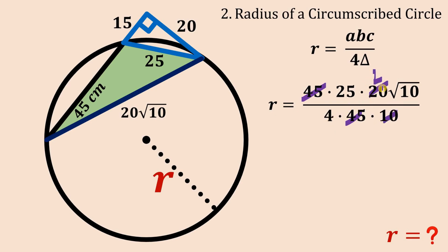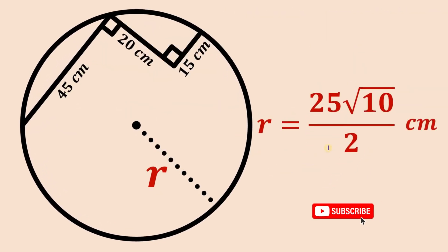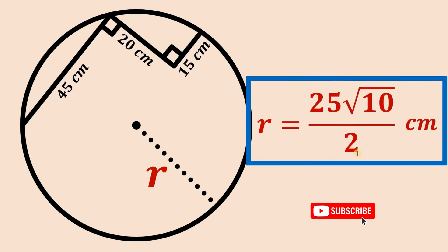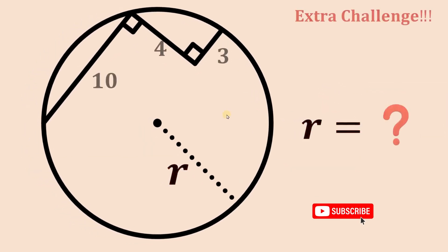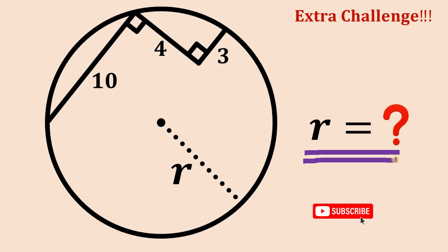Upon simplification, the 45 cancels, the 20 and 10 reduce to 2, and the 4 and 2 cancel to give 2 in the denominator. The length of the radius is therefore 25 times the square root of 10 all over 2 centimeters — confirming our answer. Before we end, here's an extra challenge: given a similar figure, find the length of the radius of that circle.